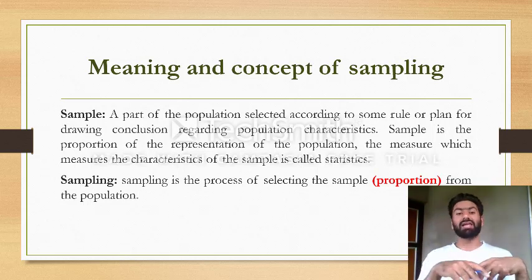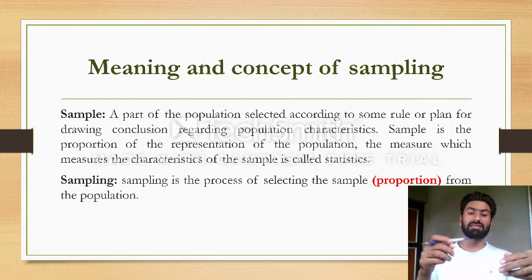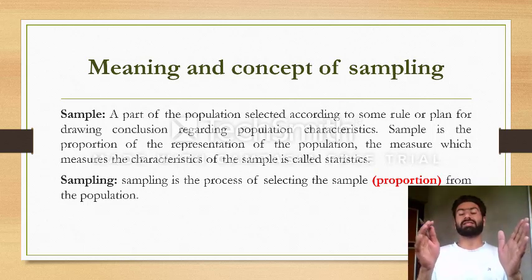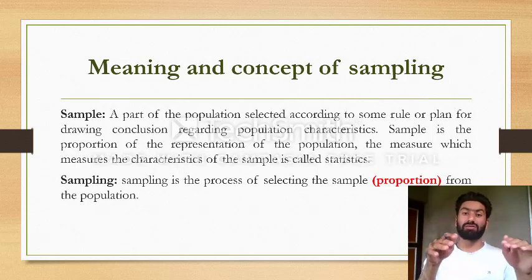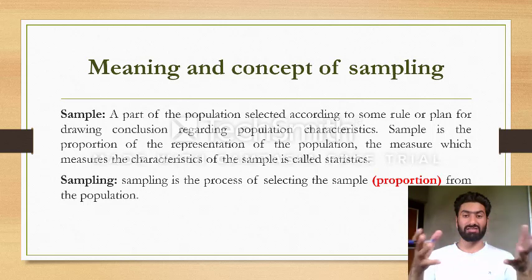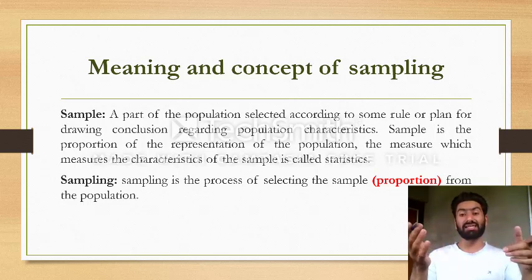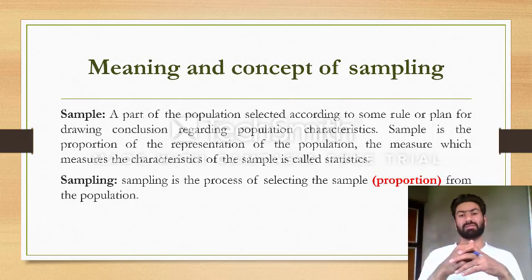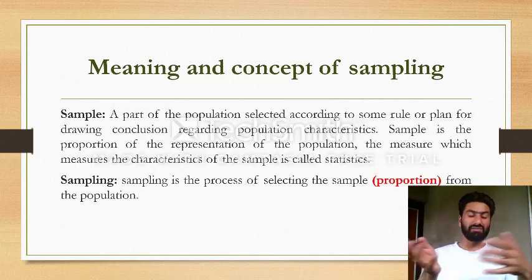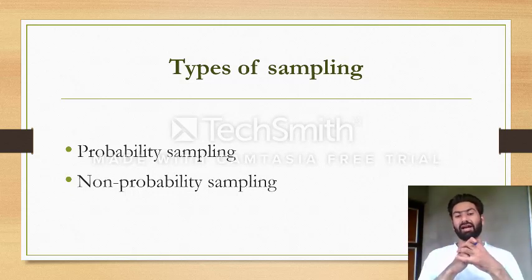Next is sampling. Sampling means the process of selecting a sample — selecting the proportion from the population. Sampling can be done through various methods. There are two types of sampling: probability sampling and non-probability sampling.